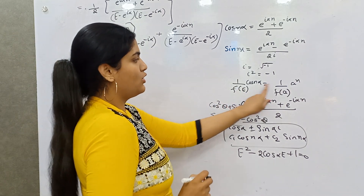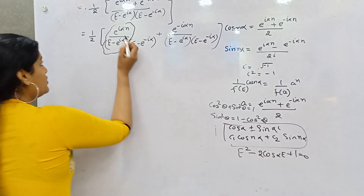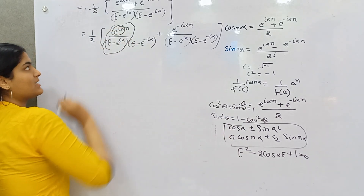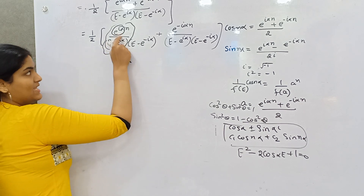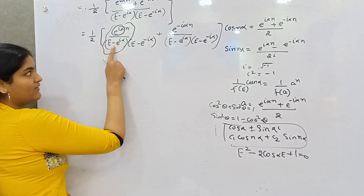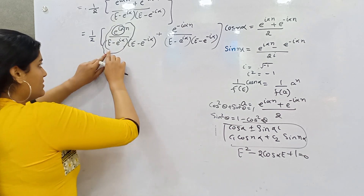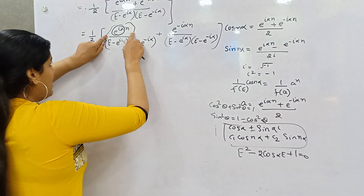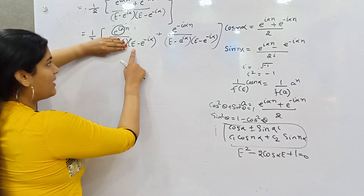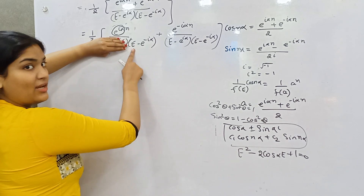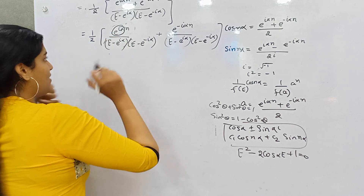The formula says you just put A in place of E. Here A is e^(iα). But if you put e^(iα) in (E - e^(iα)), it leads to a 1/0 indeterminate form, so you cannot do this directly.